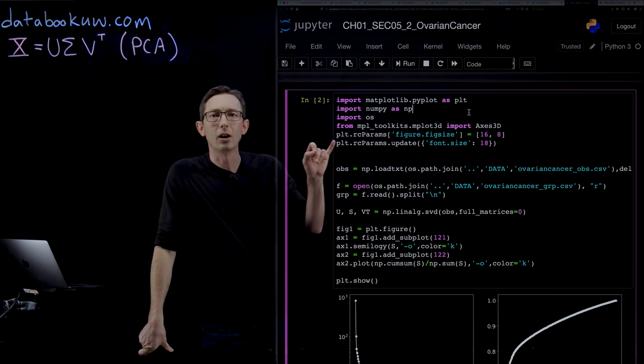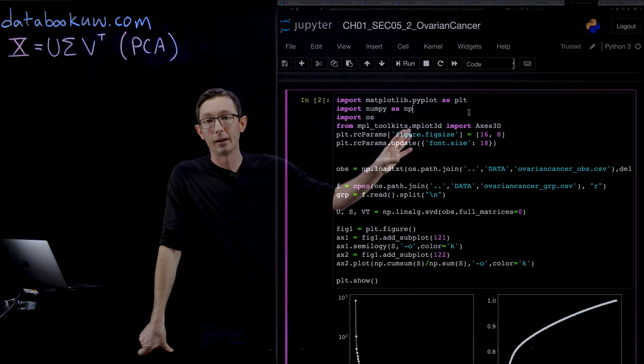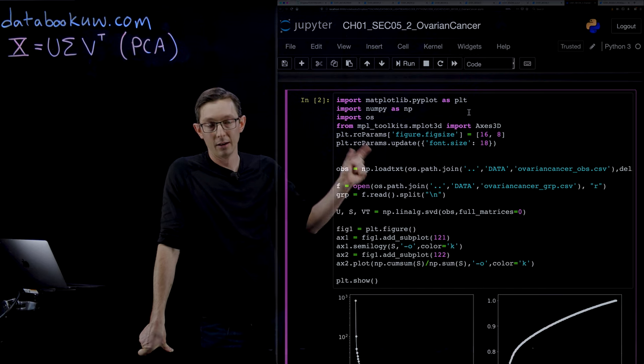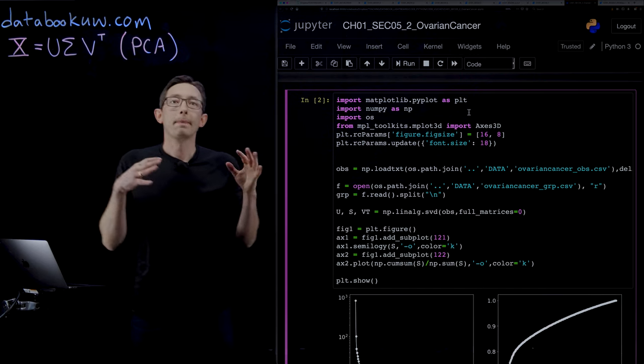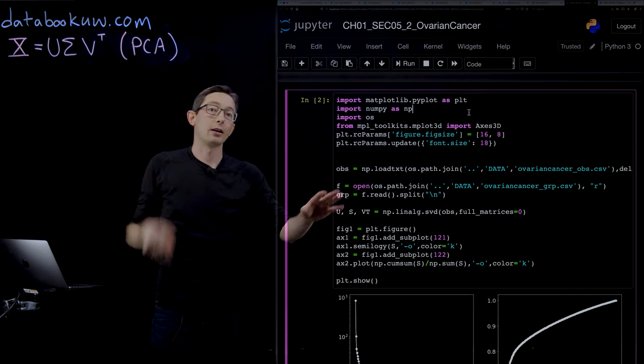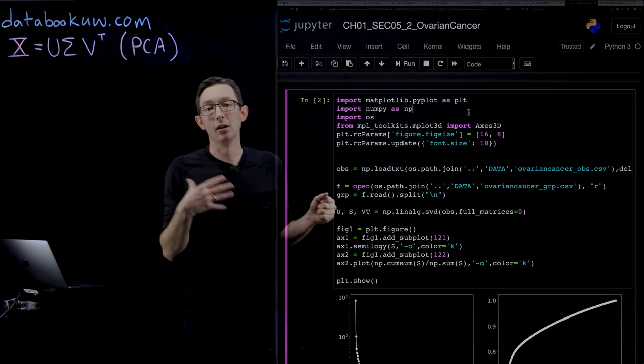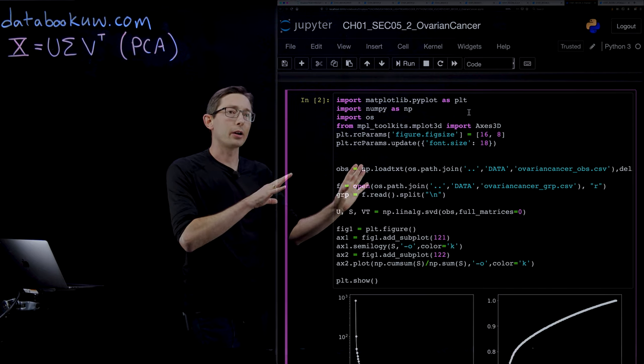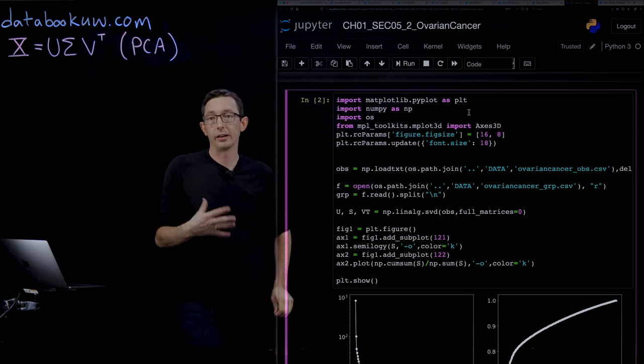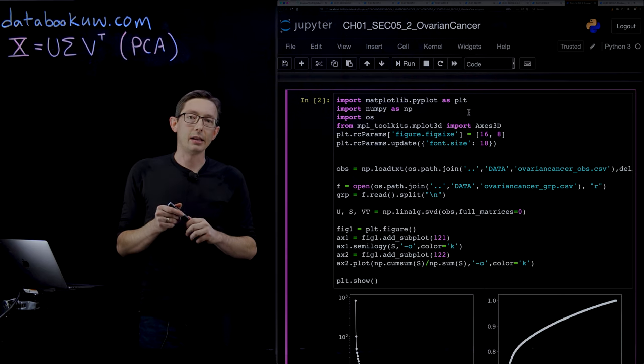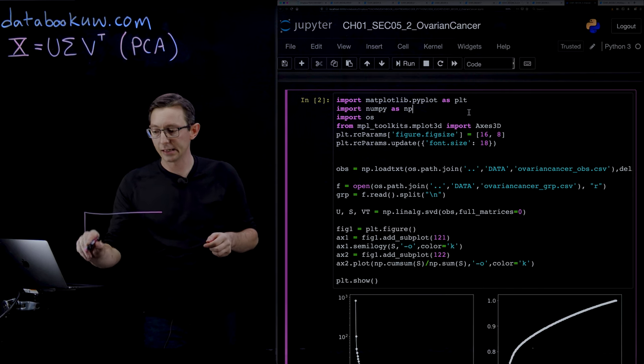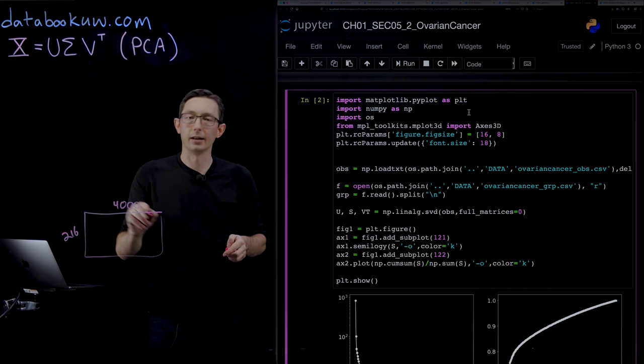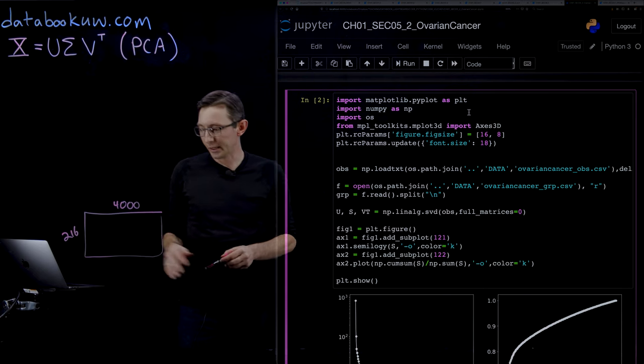This is the ovarian cancer data set, a built-in data set in MATLAB that you can now load in this comma-separated variable CSV file. You can download it at databook.com or databookuw.com. This lecture follows section 1.5 of our new book Data-Driven Science and Engineering. This is actually a really interesting data set.